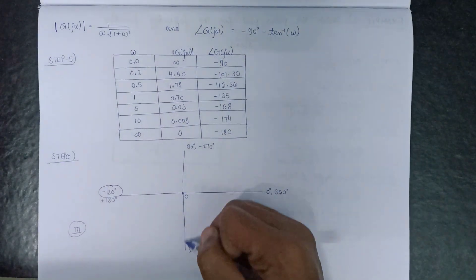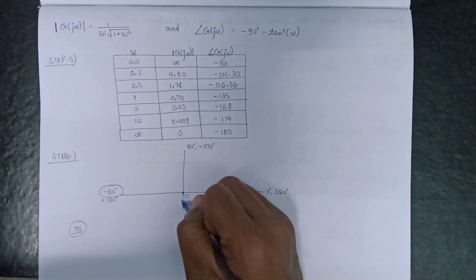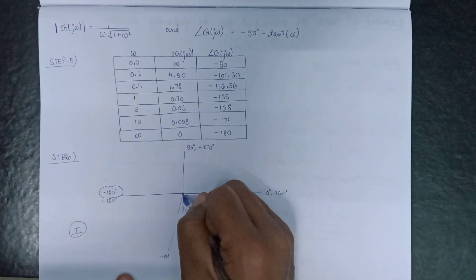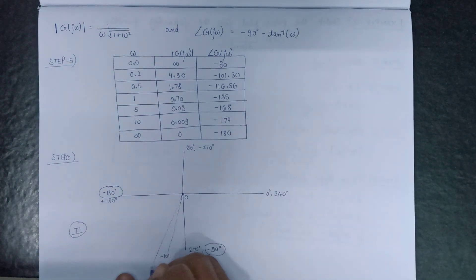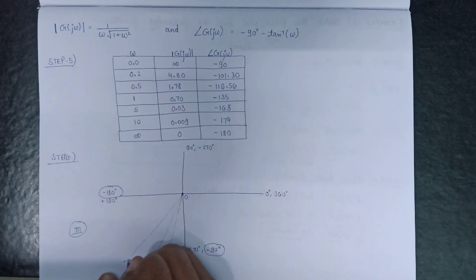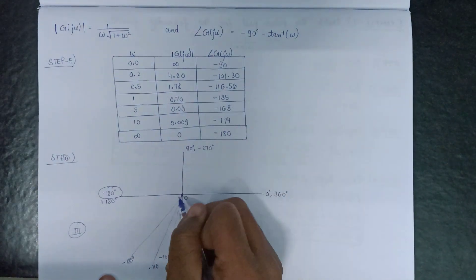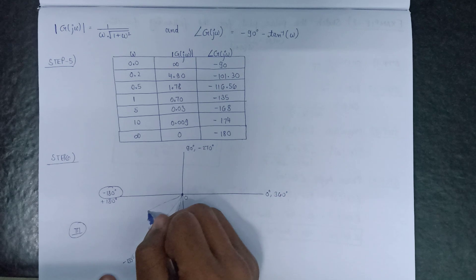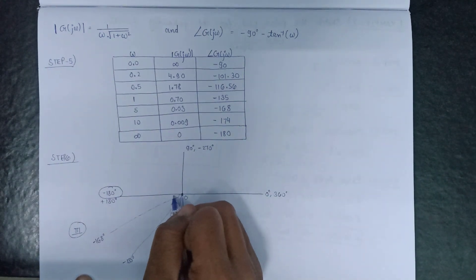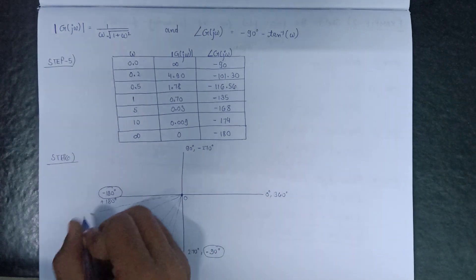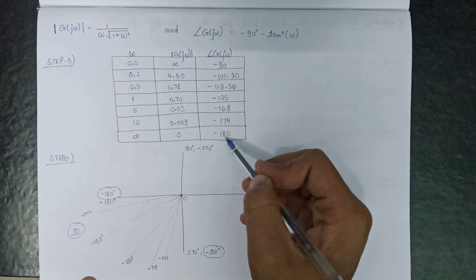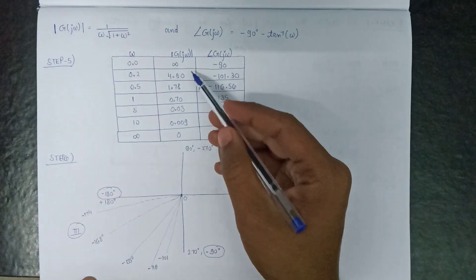Now drawing all the angles: the first angle is −90°, the second is −101° which is somewhere here, the third is −116°, the fourth is −135°, the next is −168°, then −174°, and finally −180°. This covers all the phase angles to be plotted.